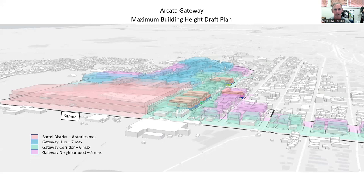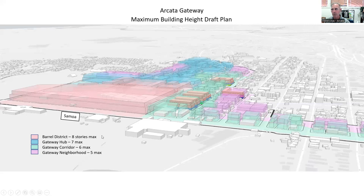I'm showing you the Arcata Gateway Area glass boxes as currently proposed in draft form — subject to the discretion of decision makers and your input. I'm showing you four districts proposed in the Gateway Area Plan: the Barrel District in pink, Gateway Hub in blue, Gateway Corridor running along Samoa and K Streets, and the Gateway Neighborhood — more of a transition zone. Compared to the glass boxes in the background, Gateway Neighborhood provides for lower development potential than the Gateway Hub.